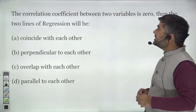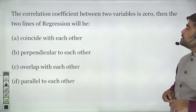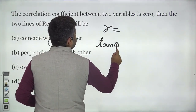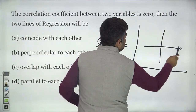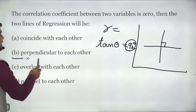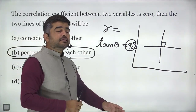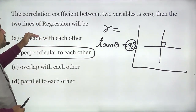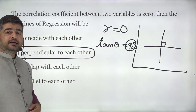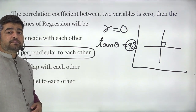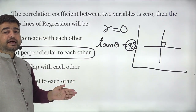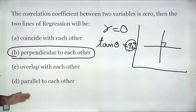Question six: the correlation coefficient between two variables is 0. What happens to the two lines of regression? When r is 0, the angle theta between the two regression lines becomes 90 degrees. So our answer is that they will be perpendicular to each other. The slope of one line will be 0 and the other will be at 90 degrees, making them perpendicular.